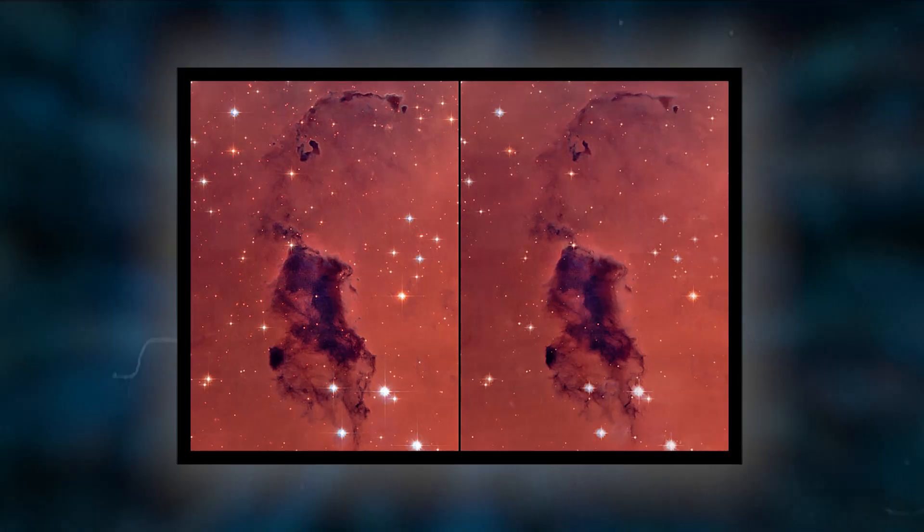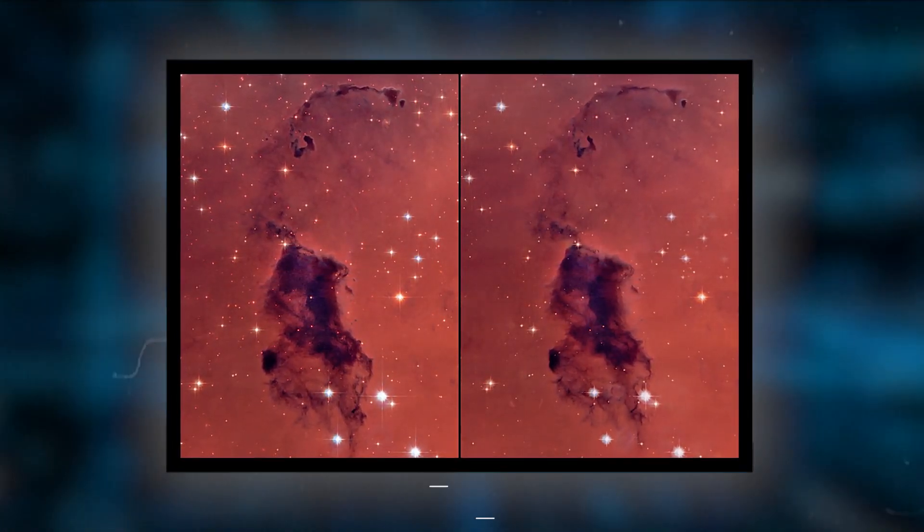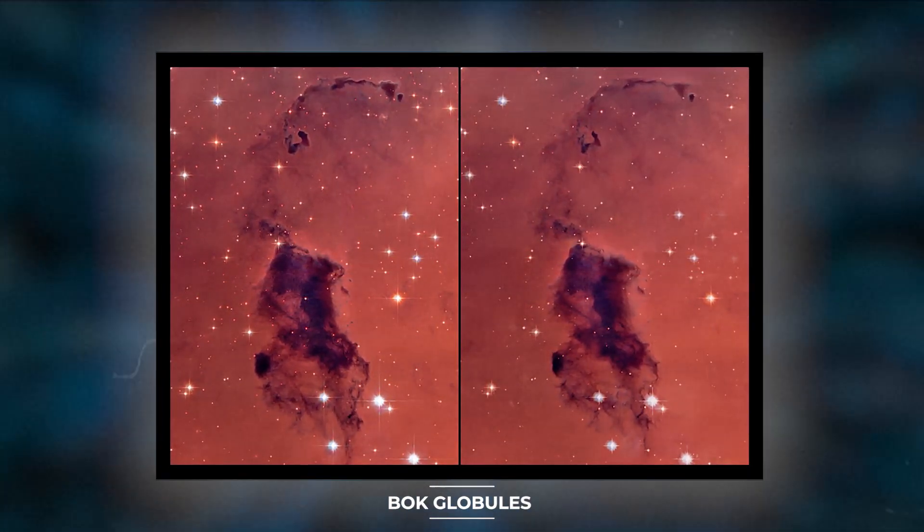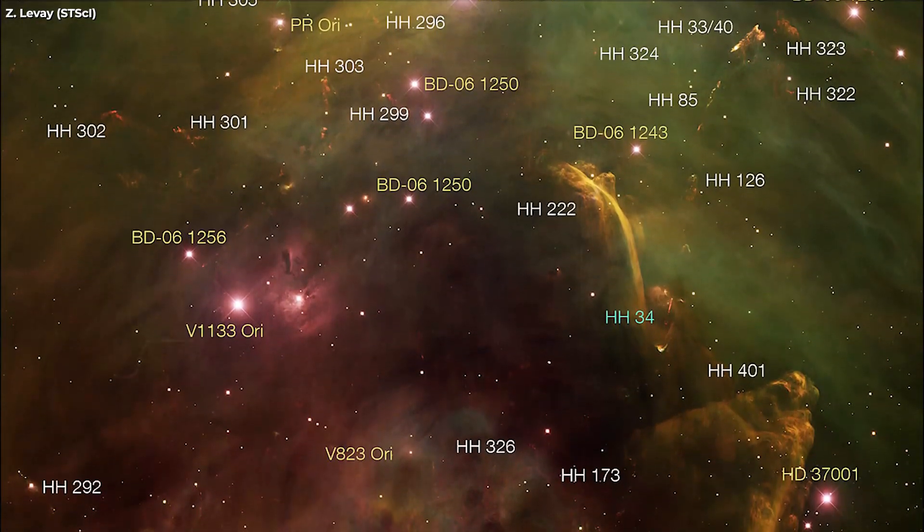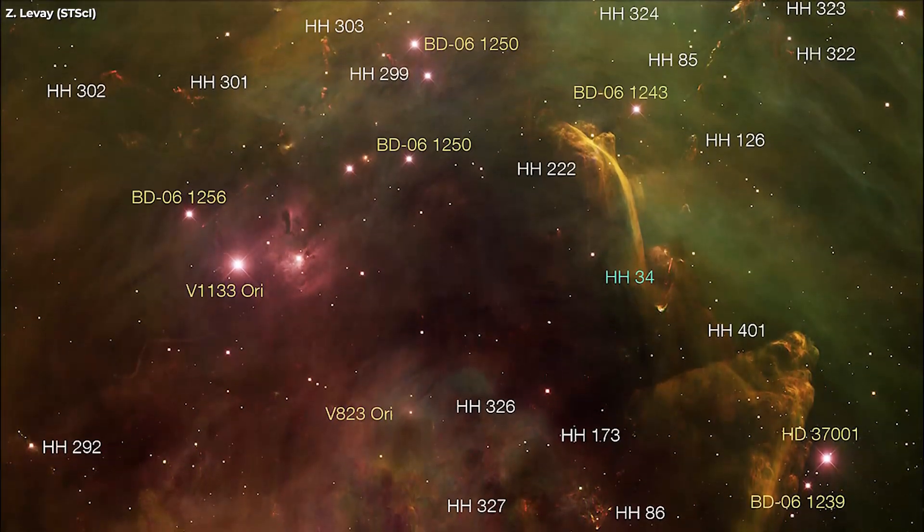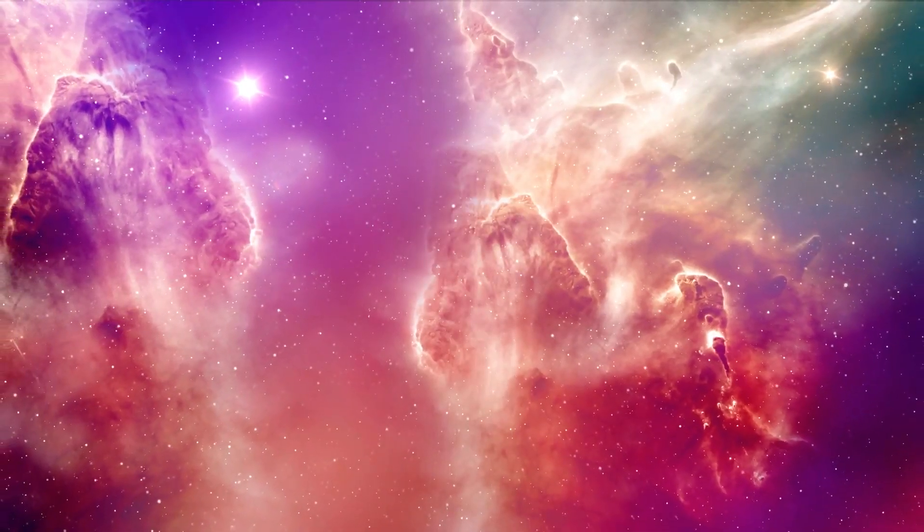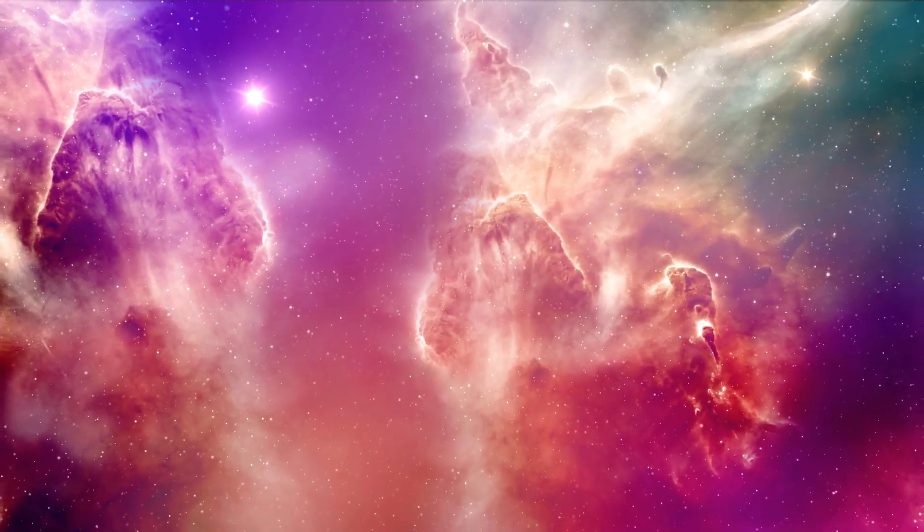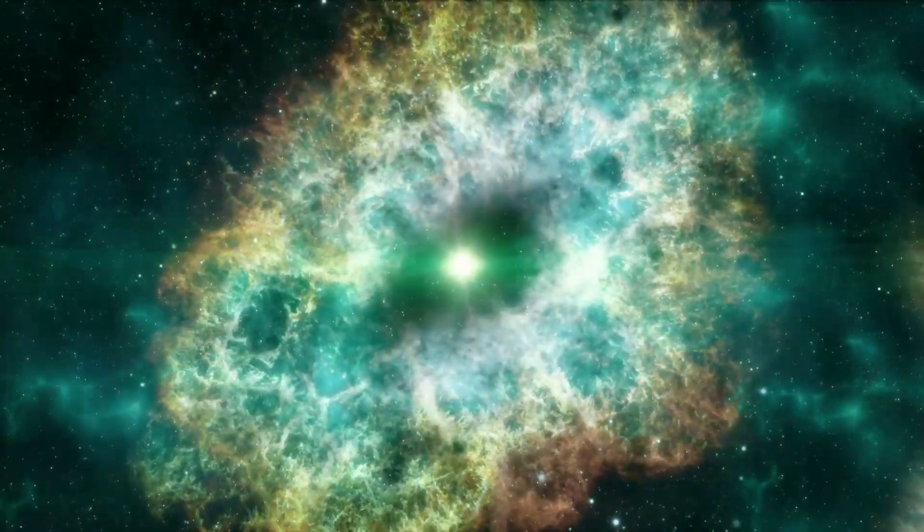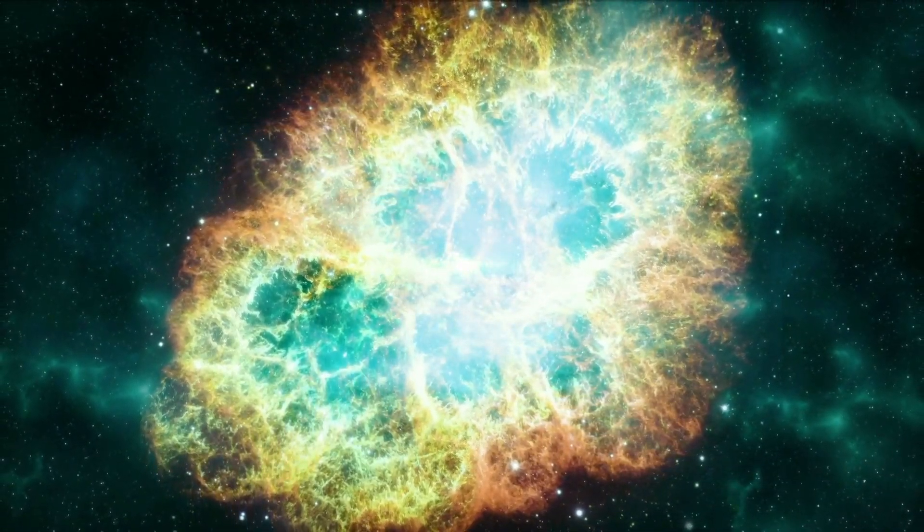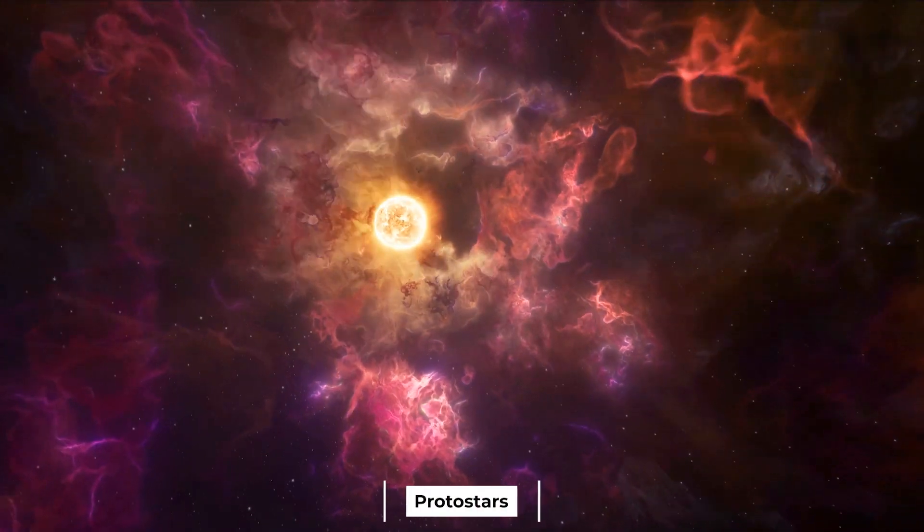HH objects are frequently found near dark clouds, referred to as Bok globules, and are typically connected with H2 regions. More than a thousand are currently known, providing an opportunity to study star formation from its earliest stages. Typically, as stars develop, a cloud of material collapses and forms stellar cores, or protostars.